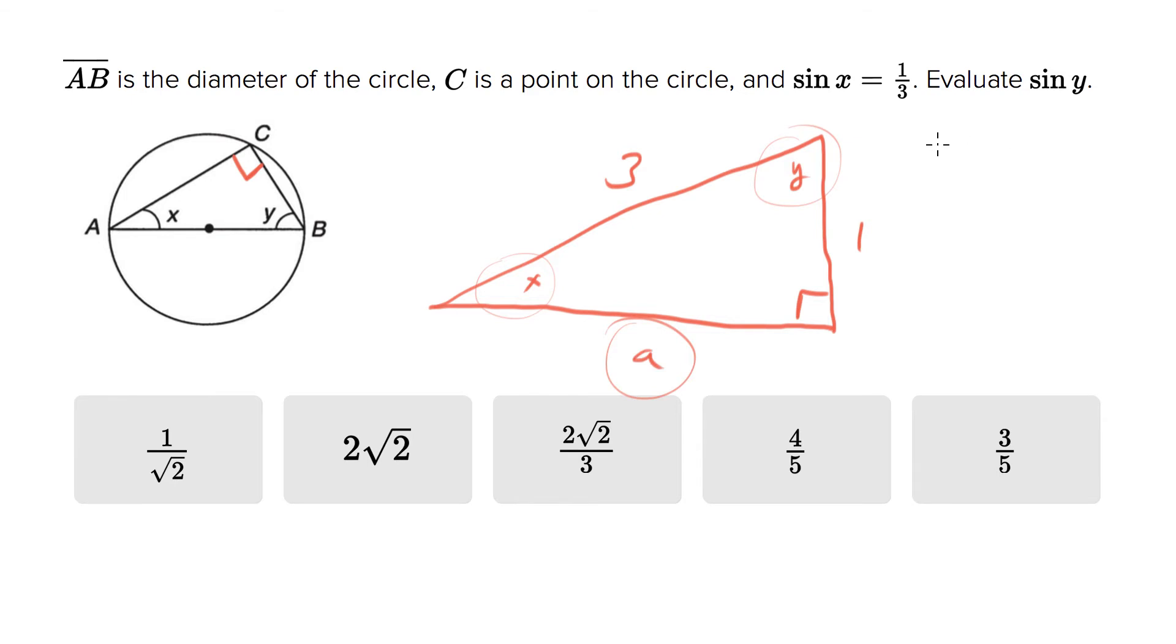Let's call this a. We know that with the Pythagorean theorem we can say 1² + a² = 3². So a² = 3², which is 9, minus 1, which is 8.